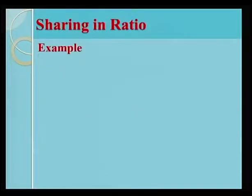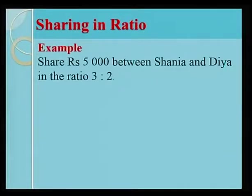We have an example of sharing in ratio. Share 5,000 rupees between Shania and Dia in the ratio 3 is to 2. The solution?